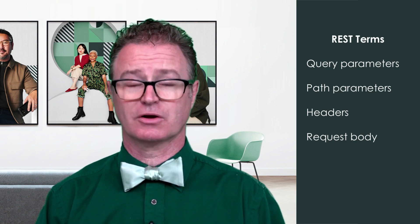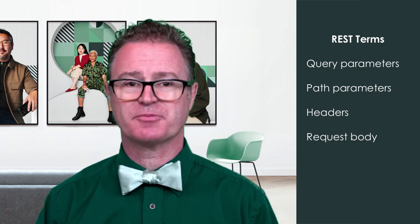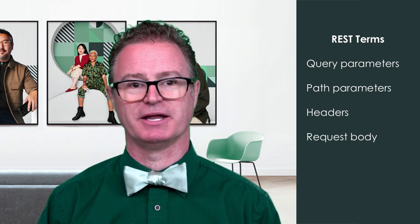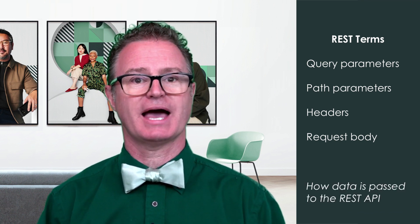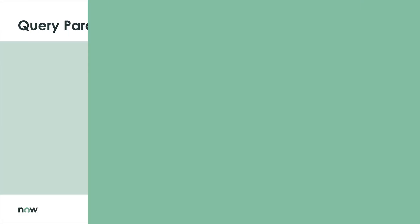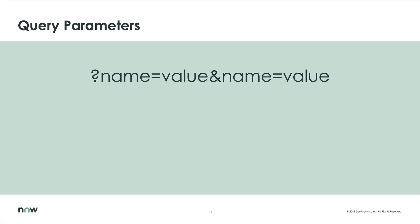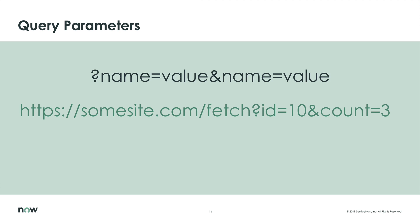Here are a few more terms to be familiar with as we build sample REST integrations: query parameters, path parameters, headers, and the request body. These deal with how information is passed to the REST API. A query parameter is the part of the URL that often has the format of name equals value. In this example, the API can look at the query parameter to determine that two query parameters have been passed: ID with a value of 10, and count with a value of 3.